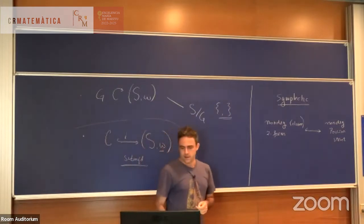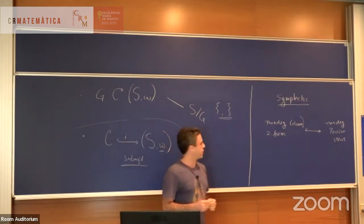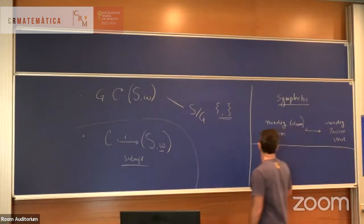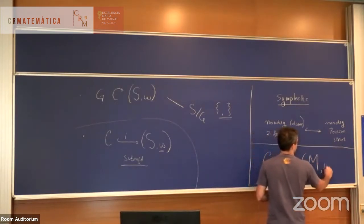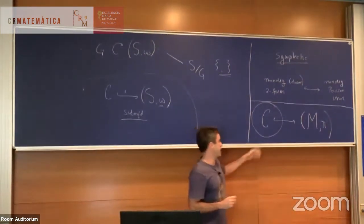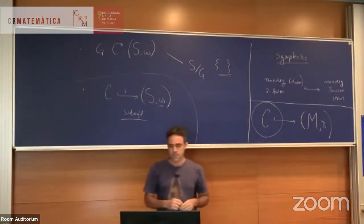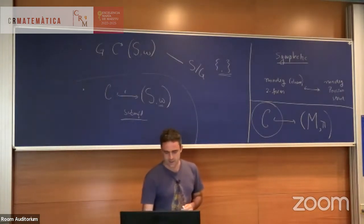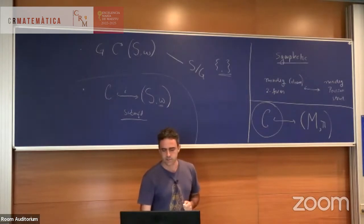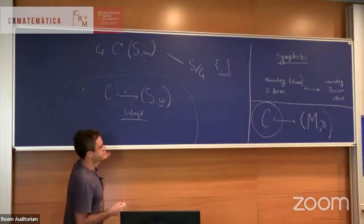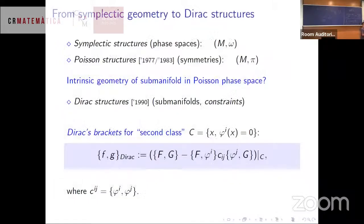Dirac structures are about submanifolds of Poisson phase spaces — trying to understand what kind of geometrical structure this inherits. Dirac structures are named after Dirac, who studied submanifolds and constraints in physical systems. One of the many things that made Dirac famous is a certain formula that one sees in physics books, and it's also in our problem set. This formula is derived as follows. Suppose you have a symplectic manifold and a constraint submanifold, and suppose you are in the lucky situation that the pullback of the form is symplectic again — that's what Dirac called second class.